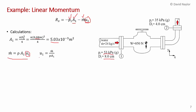The inlet velocity is u1 = 24 / (998 × 5.03 × 10⁻³) = 4.78 m/s. Units check: kg/s divided by (kg/m³ × m²) gives m/s. Now we have everything needed to evaluate Rx.